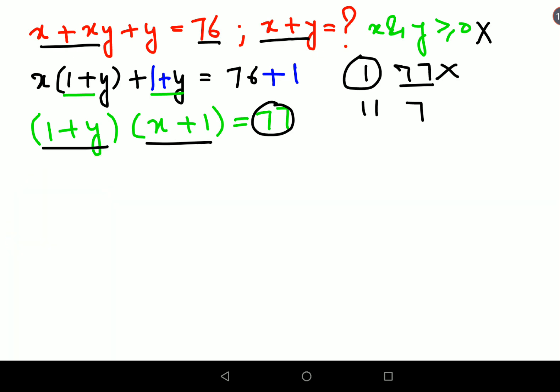So let's look at the next factor pair. Here (1 plus y) equals 11 and (x plus 1) equals 7. Therefore, 1 plus y equals 11 gives us y equals 10. Similarly, 1 plus x equals 7, so x equals 7 minus 1, which is 6.